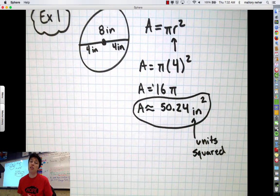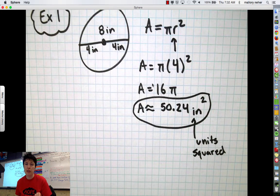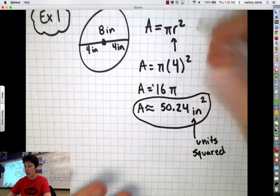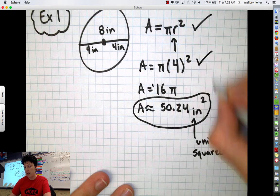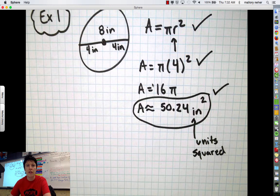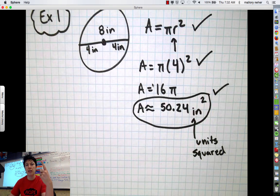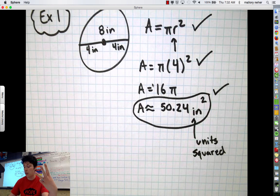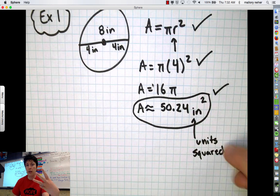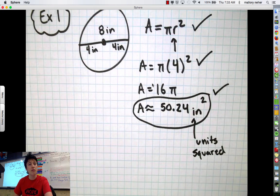So if you watched the previous video that I posted earlier on circumference, this is a very similar process. It involves formula, numbers, answer. I'm always looking for kind of three steps. Do you know the formula? Can you substitute in the numbers? Can you get the correct answer with units squared? So kind of a, like I said, like a three step process.